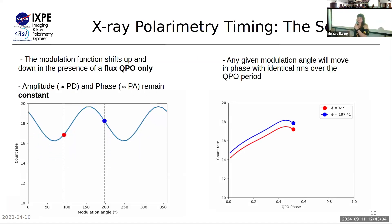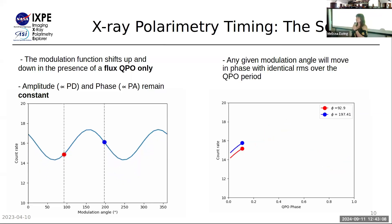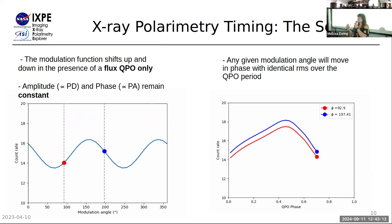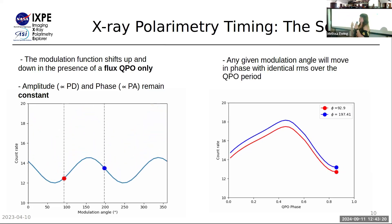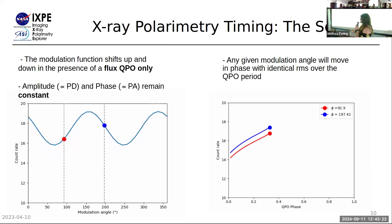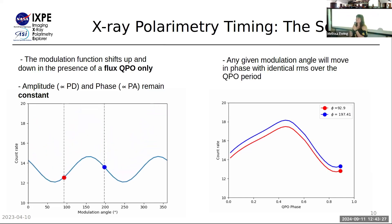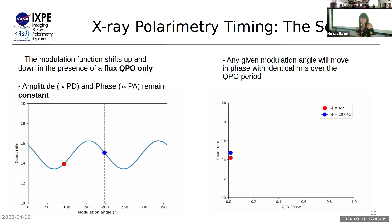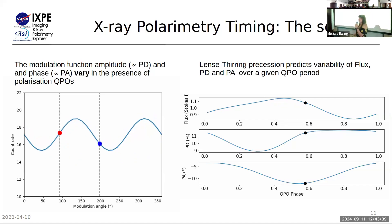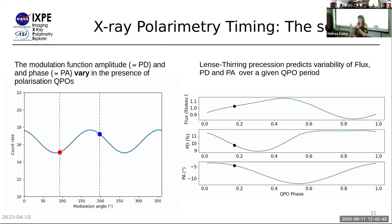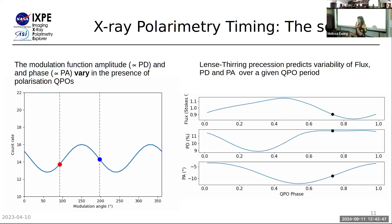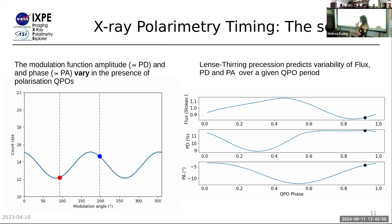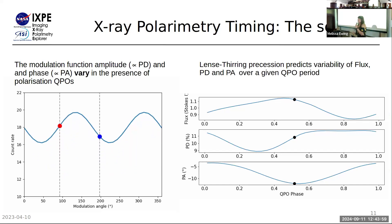Thinking back to the modulation function: if a source has only a flux QPO with no polarization variability, the flux simply moves up and down over the QPO phase, and the modulation function has a constant peak that only shifts on the counts axis. If we take any two modulation angle bins, they move with the same RMS and same phase as each other over the QPO phase. But if there is also a QPO in the polarization properties, we get a stretching and squeezing of the modulation function as well as a left-right shifting of the peak on the modulation angle axis, so any two arbitrary bins no longer move with the same RMS and phase.